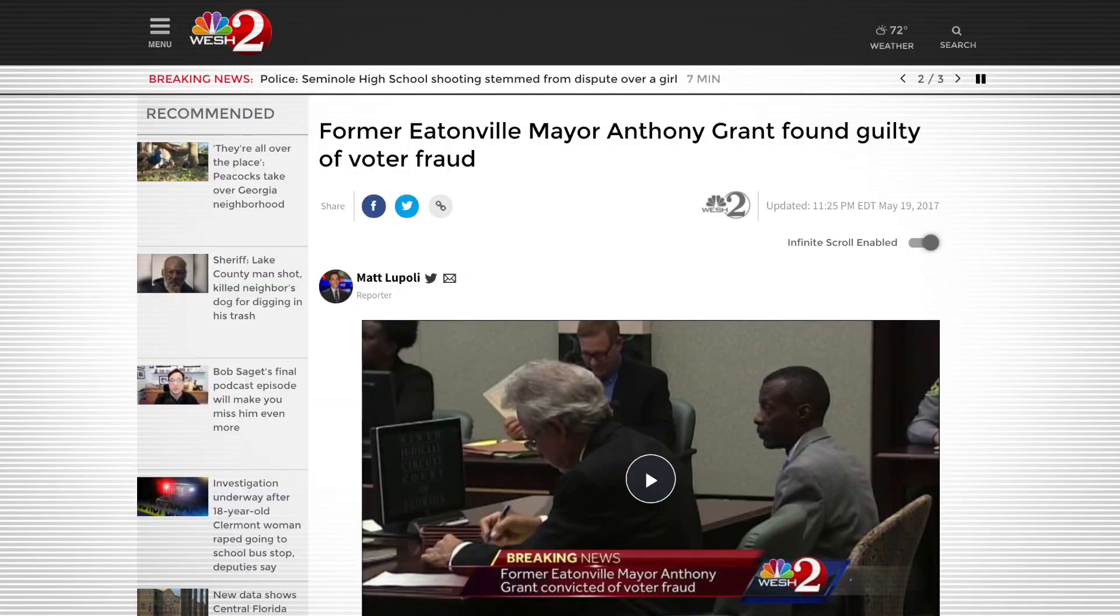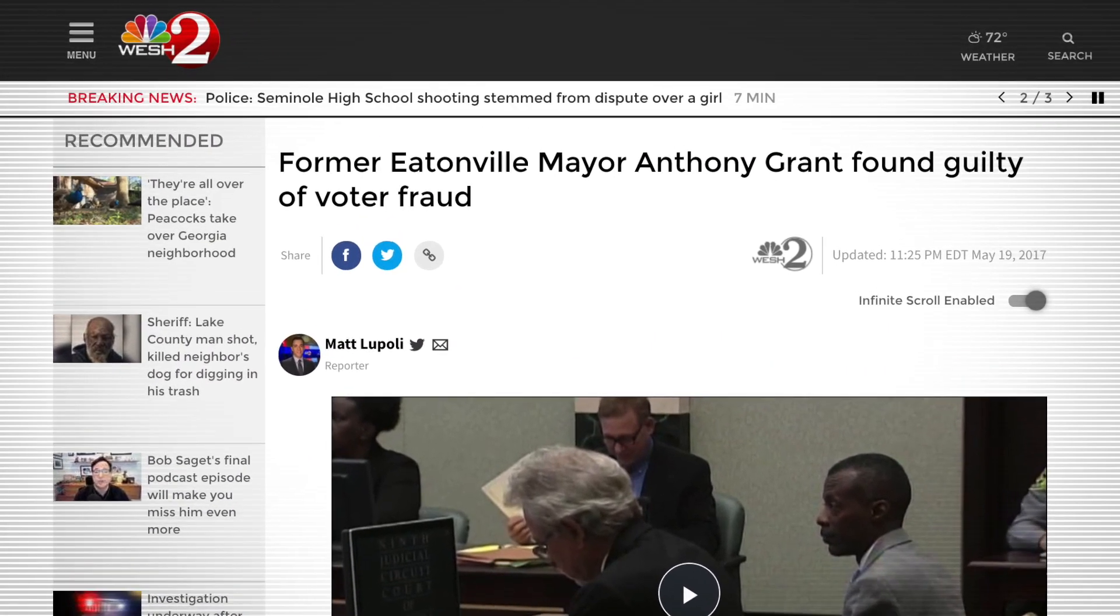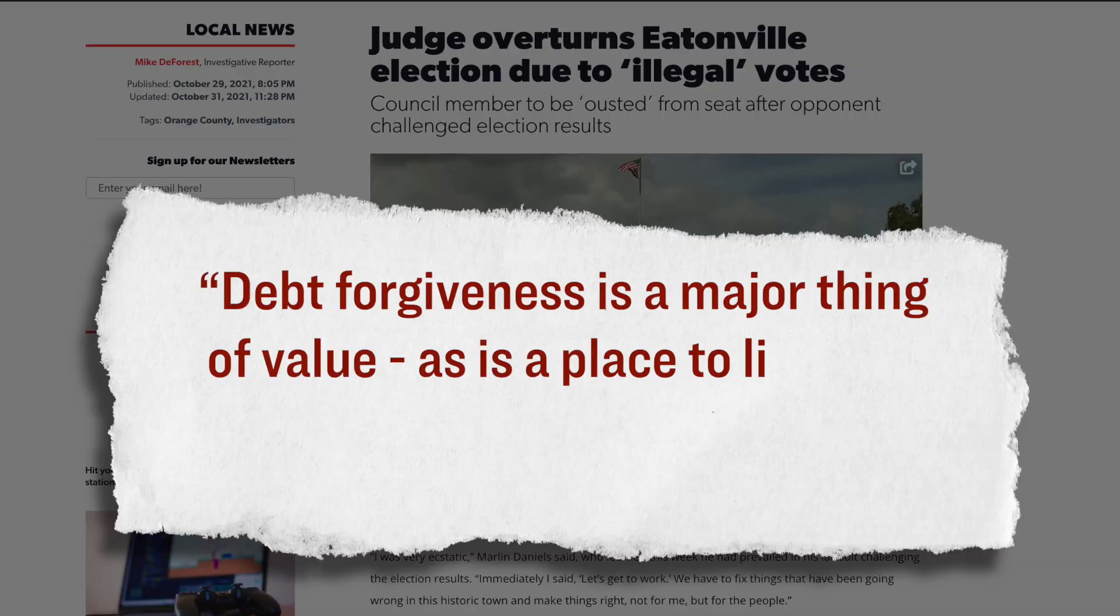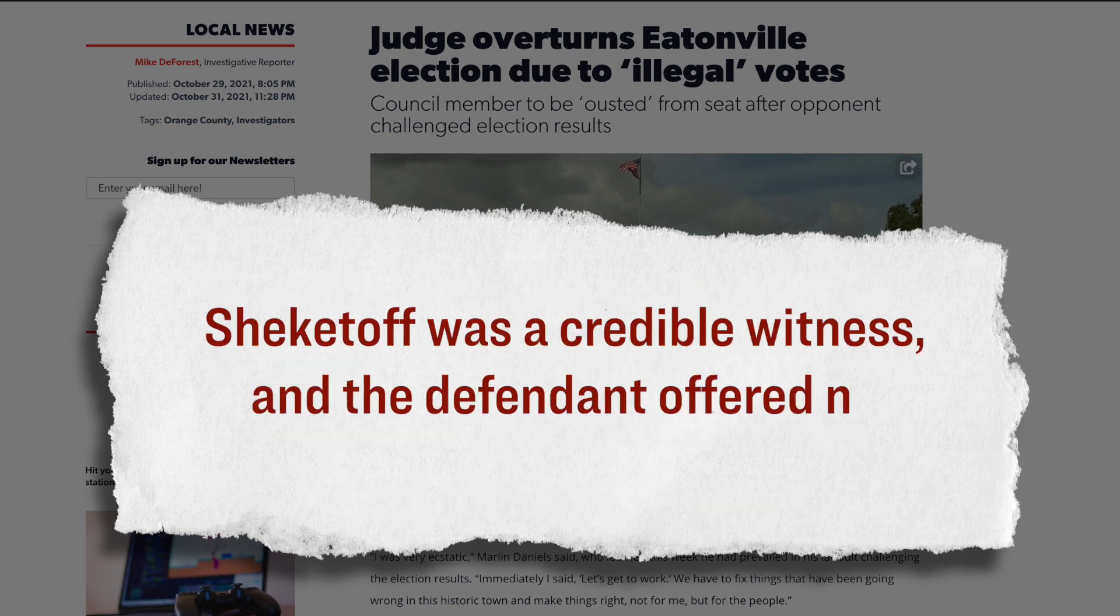However, even though he did go through with it, about a week after election day, Mr. Sheketoff said that he was locked out of his motel room anyway. And by the way, just as an aside, five years ago, this former Eatonville mayor, he was found guilty of felony voter fraud in a prior election. So naturally enough, this gave his testimony more credit. And so after hearing this witness account, the judge in the case concluded that Mr. Sheketoff's vote was illegally procured. Here's what he wrote in his ruling. Debt forgiveness is a major thing of value, as is a place to live for someone like Sheketoff, who has nowhere to go. Sheketoff was a credible witness, and the defendant offered no testimony to rebuke his testimony.